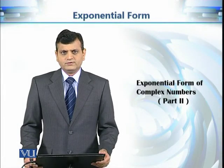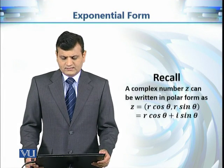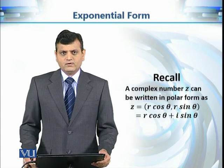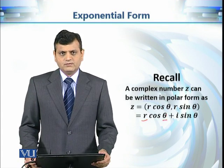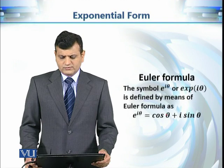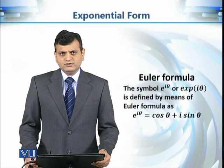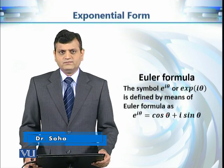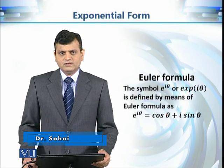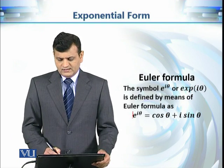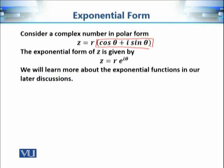We are going to continue our discussion on the exponential form of complex numbers. Recall that a complex number can be written in polar form where r and theta are polar coordinates of this complex number. We are going to use Euler's formula to simplify this expression, and this new expression will be known as the exponential form. Euler's formula is given by: e raised to power iota theta is equal to cosine theta plus iota sine theta.